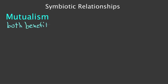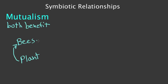Our example for mutualism: bees and plants. Plants provide nectar for bees as a form of food, and bees transfer the pollen of plants and aid them in reproduction. So both bees and plants benefit from a relationship called mutualism.